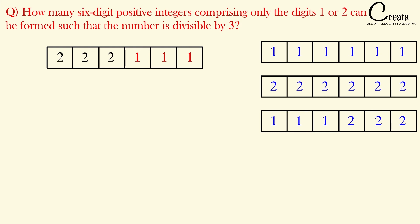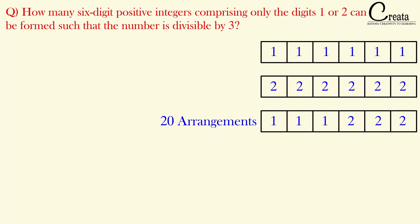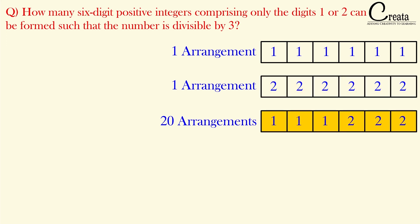Using three 1s and three 2s, we have 6 slots with 1 repeating 3 times and 2 repeating 3 times. The number of arrangements is 6 factorial divided by (3 factorial × 3 factorial), which equals 20. So in total: 1 (for 111111) + 1 (for 222222) + 20 = 22 arrangements. That is the answer to the second question.